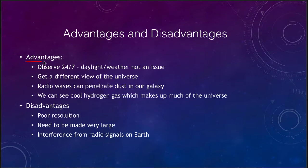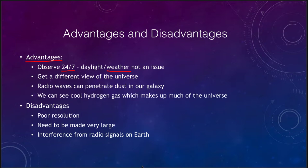Some of the advantages: first of all, you can observe 24/7. Radio waves are not affected by daylight and not much affected by weather, so you can actually observe during the day. Radio telescopes can be seen working all day long — you don't have to wait for the sun to go down. You cannot point close to the sun because the sun is a radio source as well, but as long as you're not looking in the general direction of the sun, you can still observe even during the day. Weather is not much of an issue either — if it's raining or snowing, you can still observe with a radio telescope.